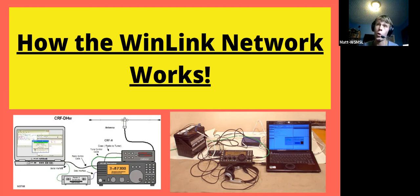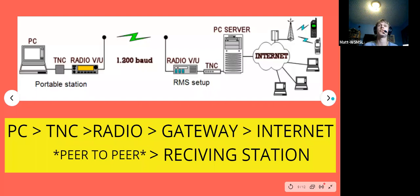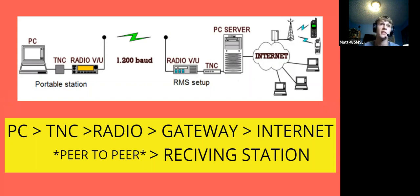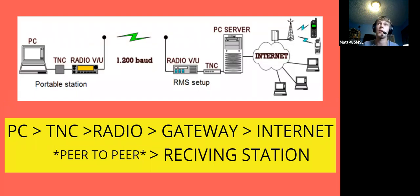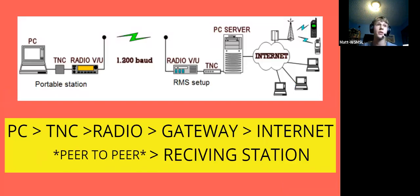Let me explain how the Winlink network works. Your transmitting station has a PC that connects to a radio via a sound card adapter or TNC, which then sends it over the air to a receiving station. There are many receiving stations out there. It can be peer-to-peer, where only the transmitting station and receiving station exchange data. The receiving station also has a PC to decode the digital mode. The big thing that makes Winlink useful is that there are gateways - similar to APRS - where the receiving station uploads messages to the internet and redirects them to the intended recipient.